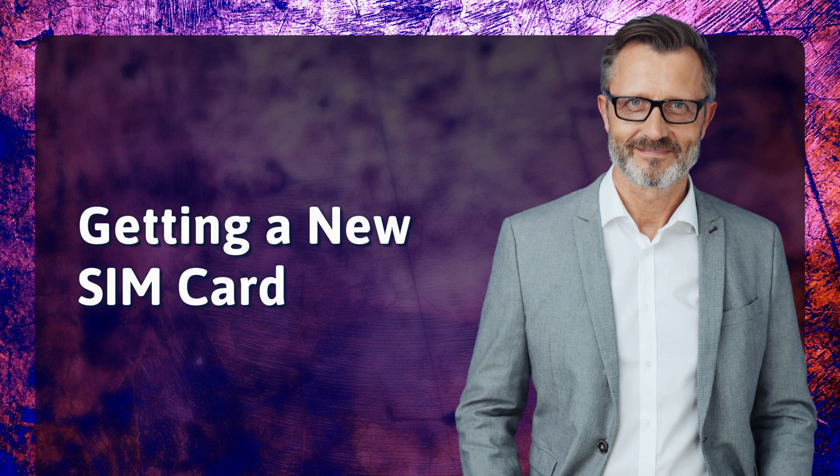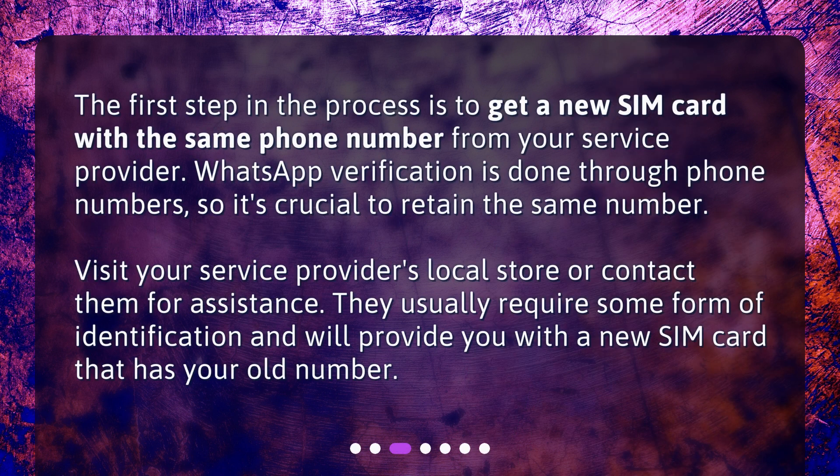Getting a new SIM card: The first step in the process is to get a new SIM card with the same phone number from your service provider. WhatsApp verification is done through phone numbers, so it's crucial to retain the same number. Visit your service provider's local store or contact them for assistance. They usually require some form of identification and will provide you with a new SIM card that has your old number.